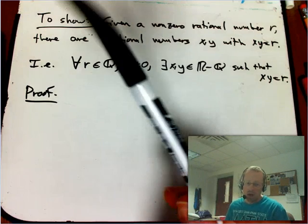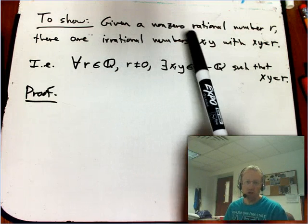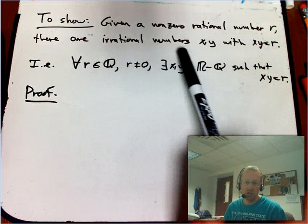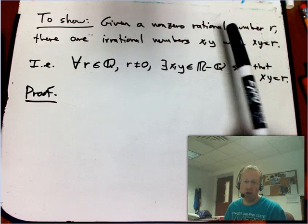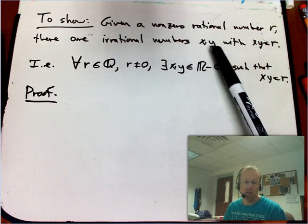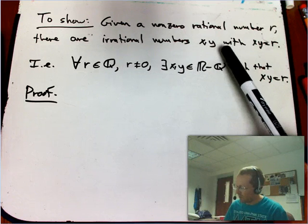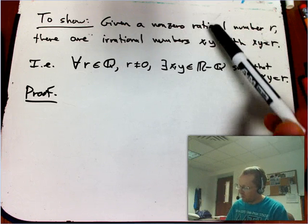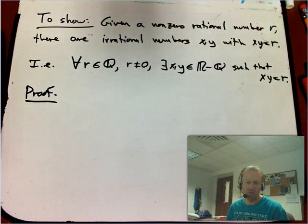So the theorem we want to show is: given a non-zero rational number R, there are irrational numbers, let's say X and Y, with the product being R. So any non-zero rational number can be expressed as the product of two irrationals. So that's interesting. And it's definitely not true, I'll let you think about it, if we switch the rational and irrational here, and we're actually going to use that within the proof.